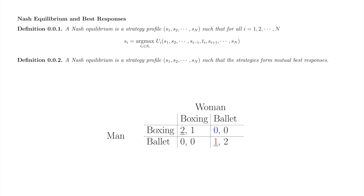Second, we'll find the man's best response when the woman plays ballet. If the woman plays ballet and the man responds boxing, he receives payoff 0 in blue. If he responds ballet, he receives payoff 1 in red. The man prefers 1 to 0, so his best response to the woman playing ballet is to play ballet himself. We'll underline the 1 to record this information.